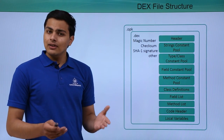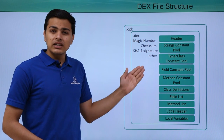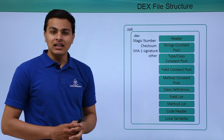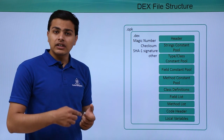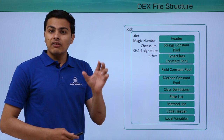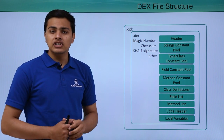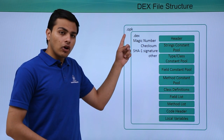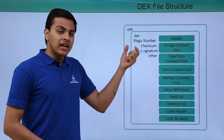Let's look at how a DEX file looks. As explained earlier in the Android application development cycle, Java bytecode is converted into Dalvik Executable code, which is then zipped into one package called the Android Application Package.